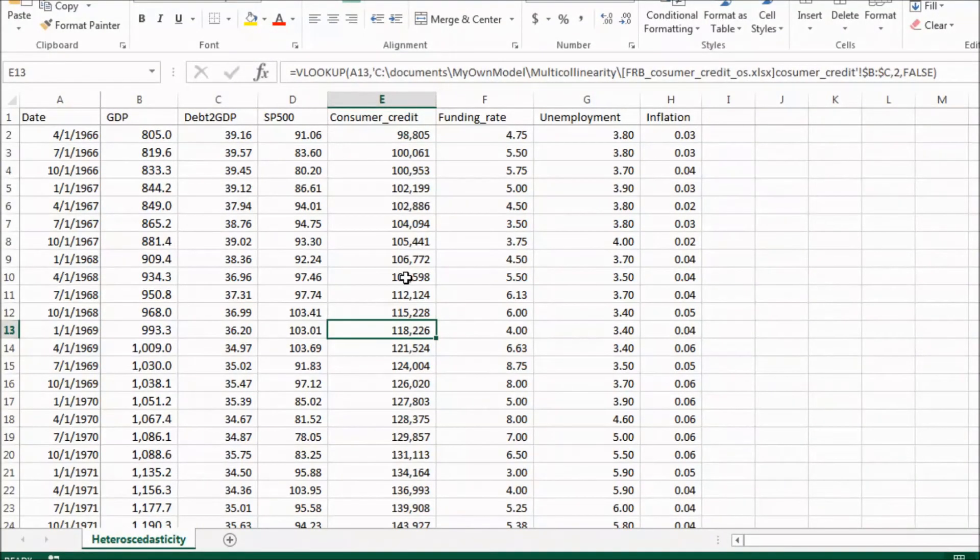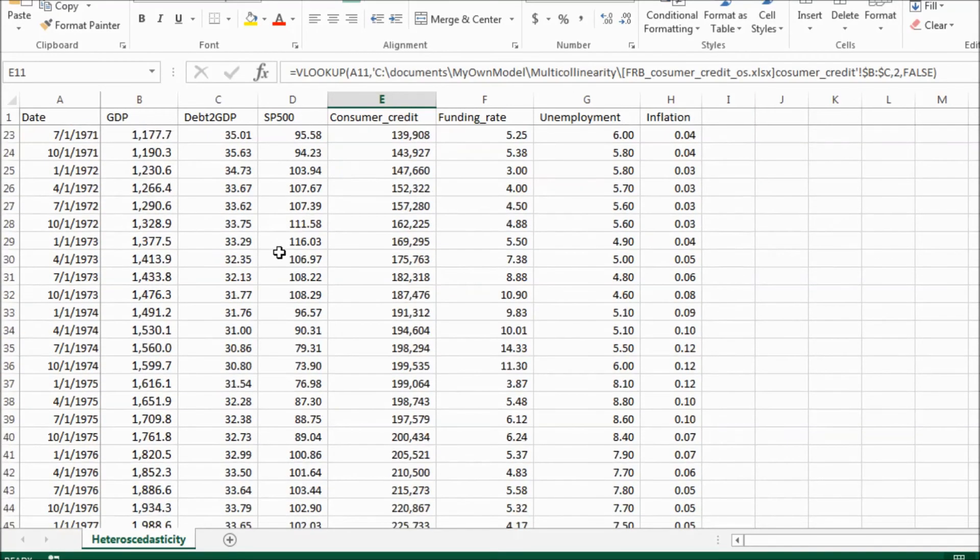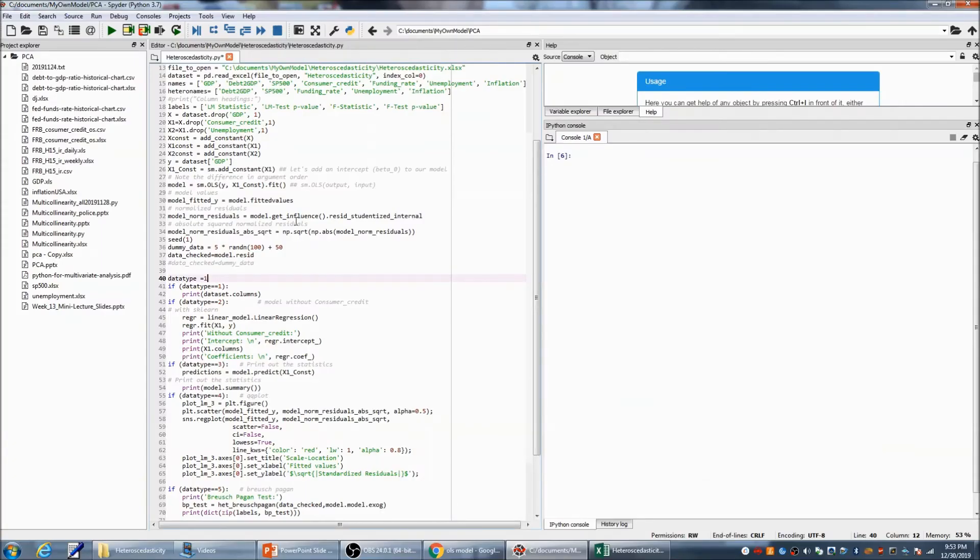First, I download the data, the dependent variable and independent variables, and save them in the Excel file. And then I read the data into Python. This is dependent variable. Those are independent variables.